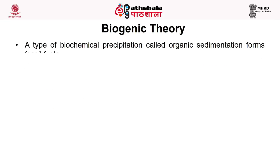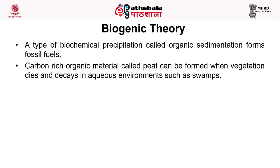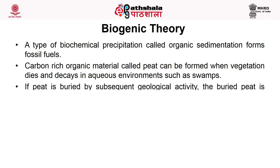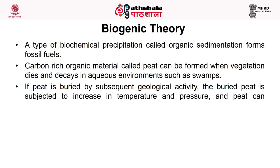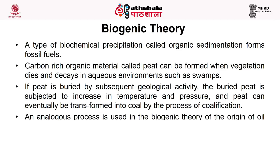In biogenic theory, a type of biochemical precipitation called organic sedimentation forms fossil fuels. Carbon-rich organic material called peat can be formed when vegetation dies and decays in an aqueous environment such as swamps. If peat is buried by subsequent geological activity, it is subjected to increasing temperature and pressure and can eventually be transformed into coal by the process of coalification. An analogous process is used in the biogenic theory for the origin of oil and gas.